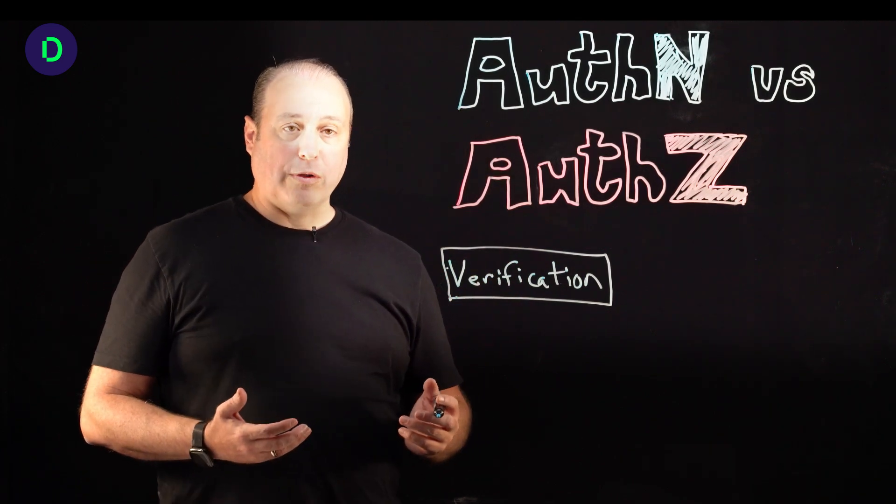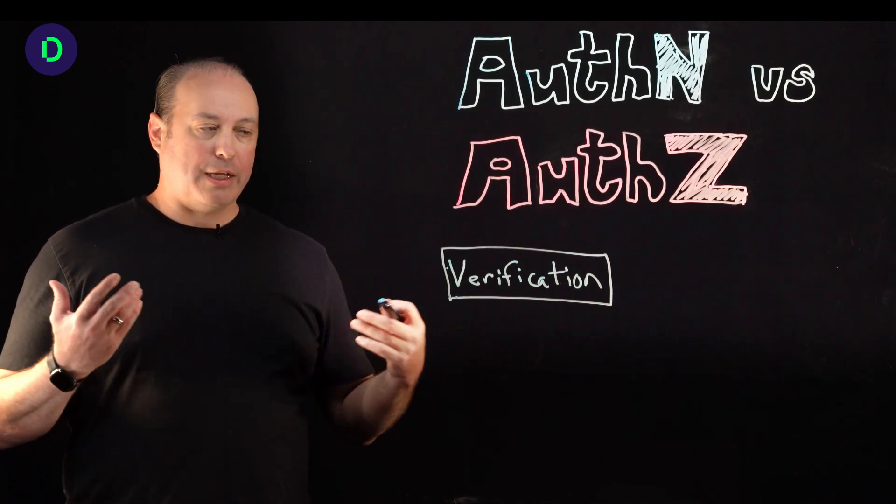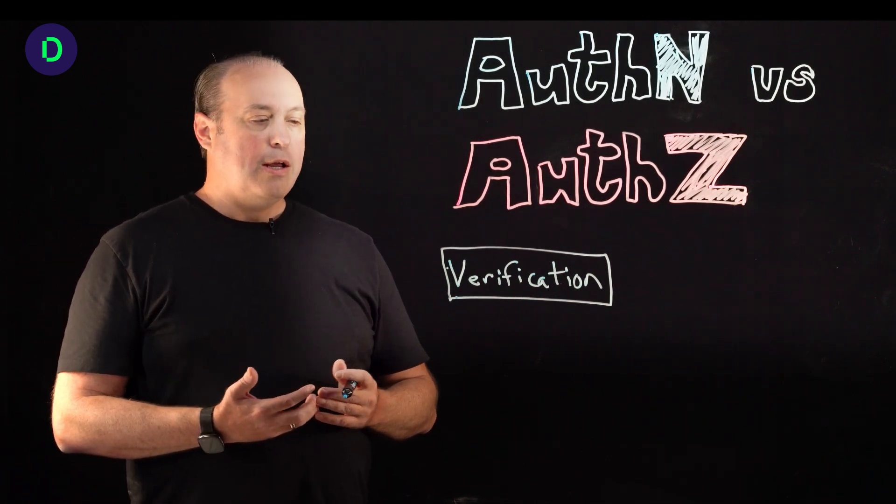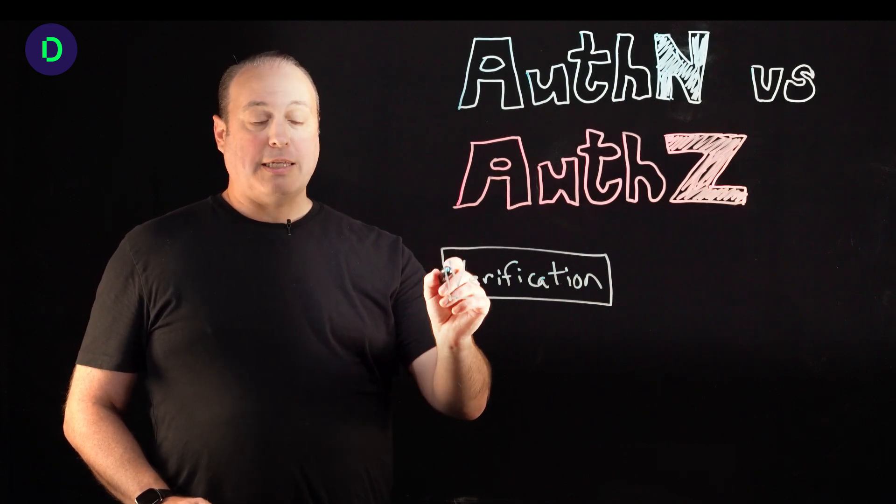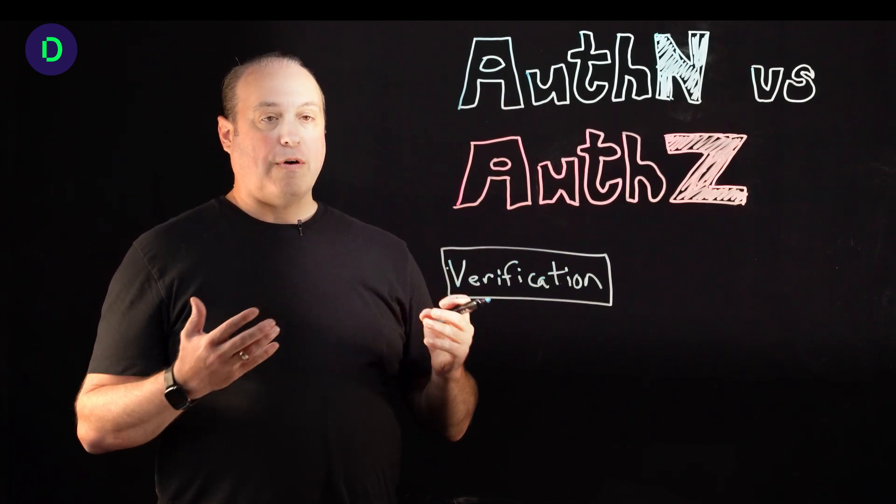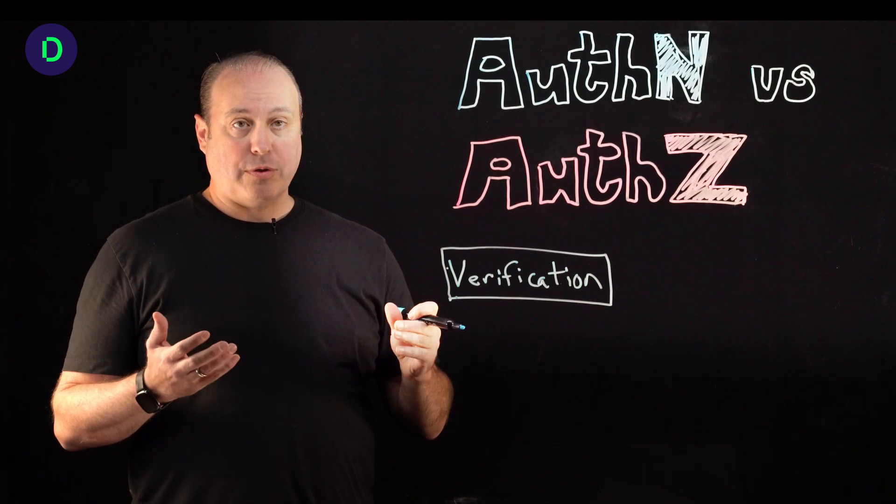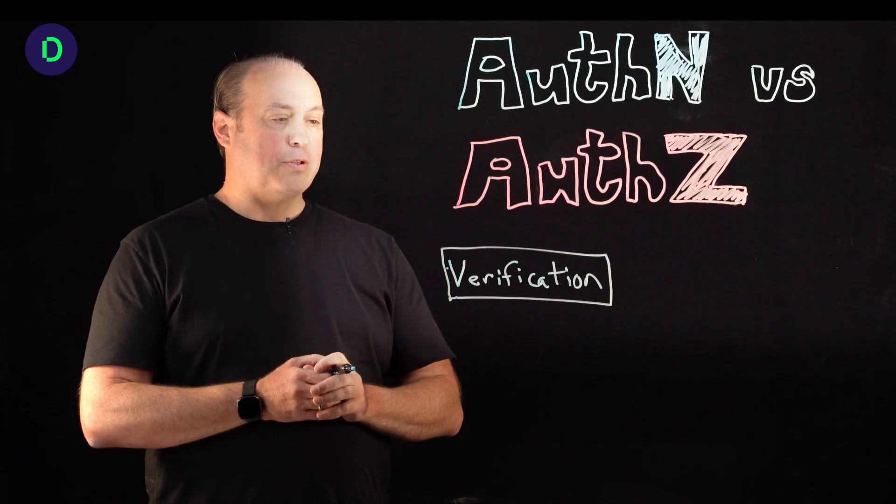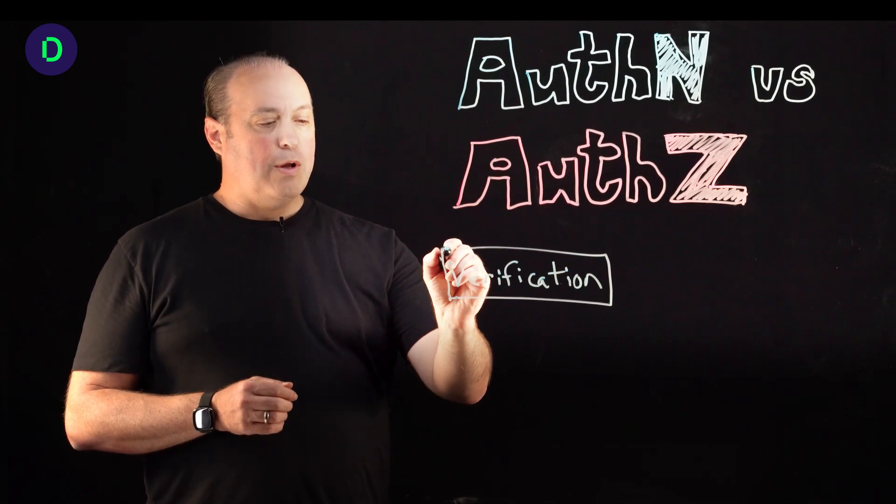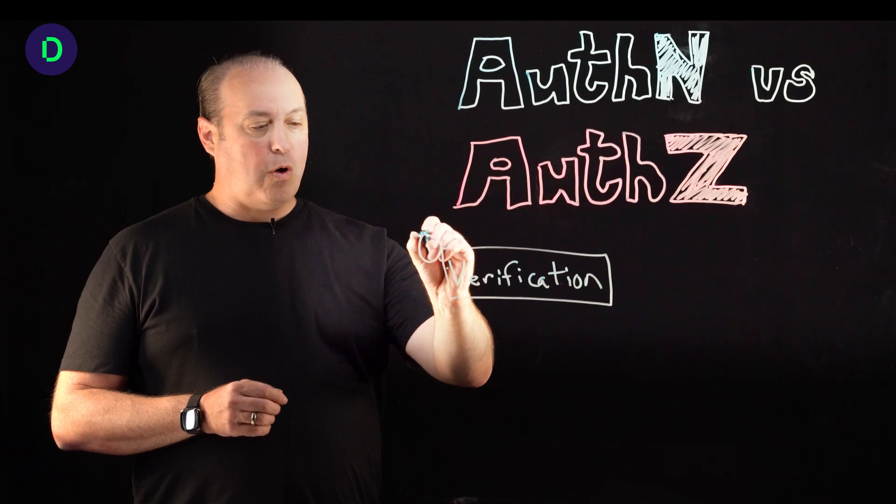And in the machine world, when you enroll a machine or a device onto a network, say you're setting up a printer or whatever, even there, this is important. A lot of times devices and machines will verify using keys, certificates, or even Kerberos, which is a type of certificate and token. So even in the machine world, this becomes important. So this is actually step one.